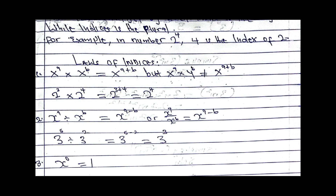Law number two is the division law: x power a divided by x power b. Since the variables are the same, you can simply subtract the powers, giving x power a minus b. For example, three power five divided by three power two equals three power five minus two, which equals three power three, because five minus two is three.